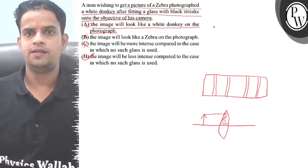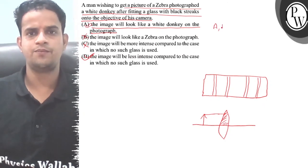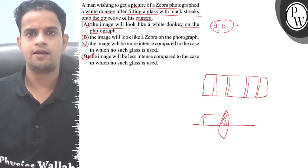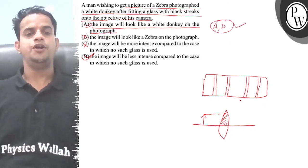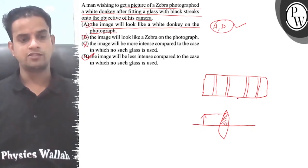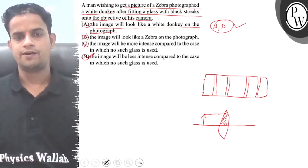So here, actually, this is an object which gives us an object — it is an object. I hope you understand this question. Let's go.